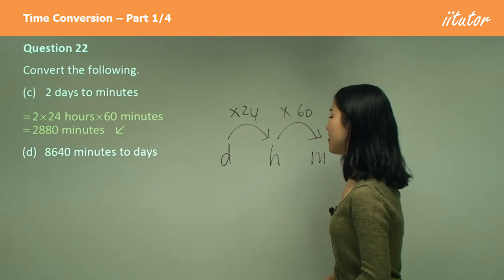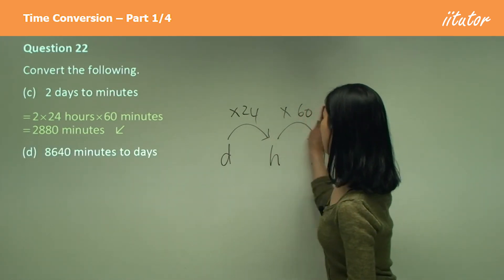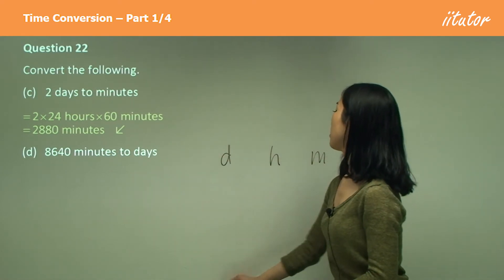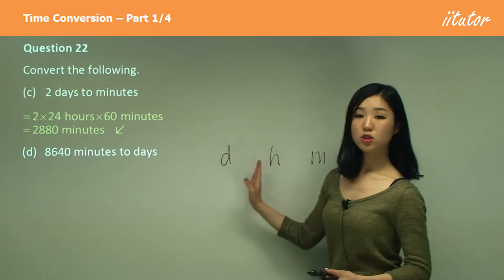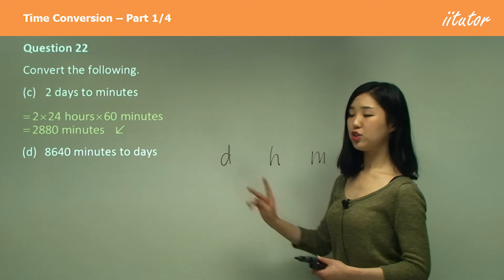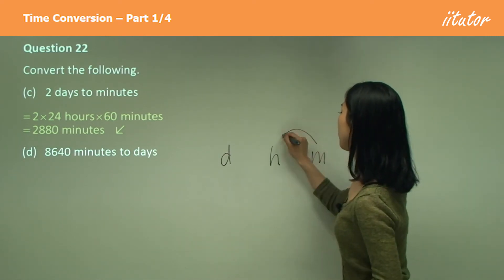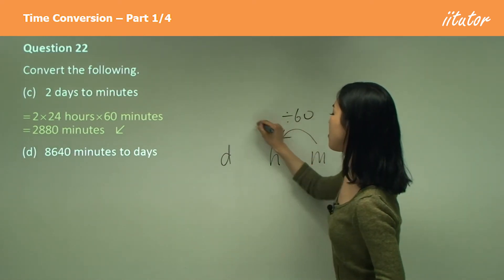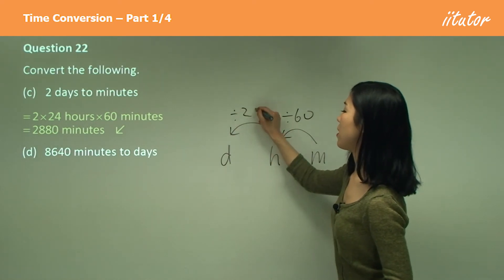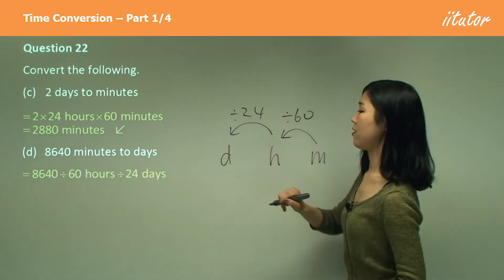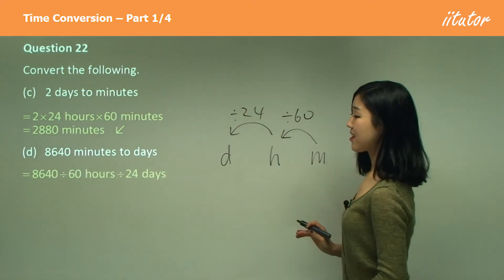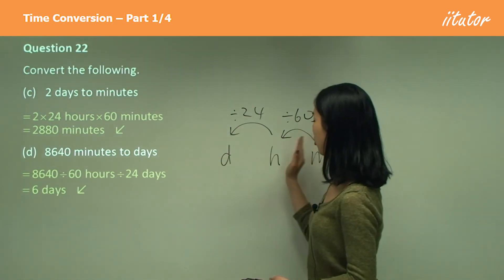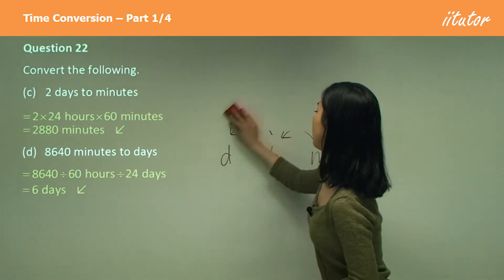Minutes to days. Small to large — we must divide. So this time we divide by 60, then divide by 24. Calculate that and you should have six days. So two lots of conversions needed there.